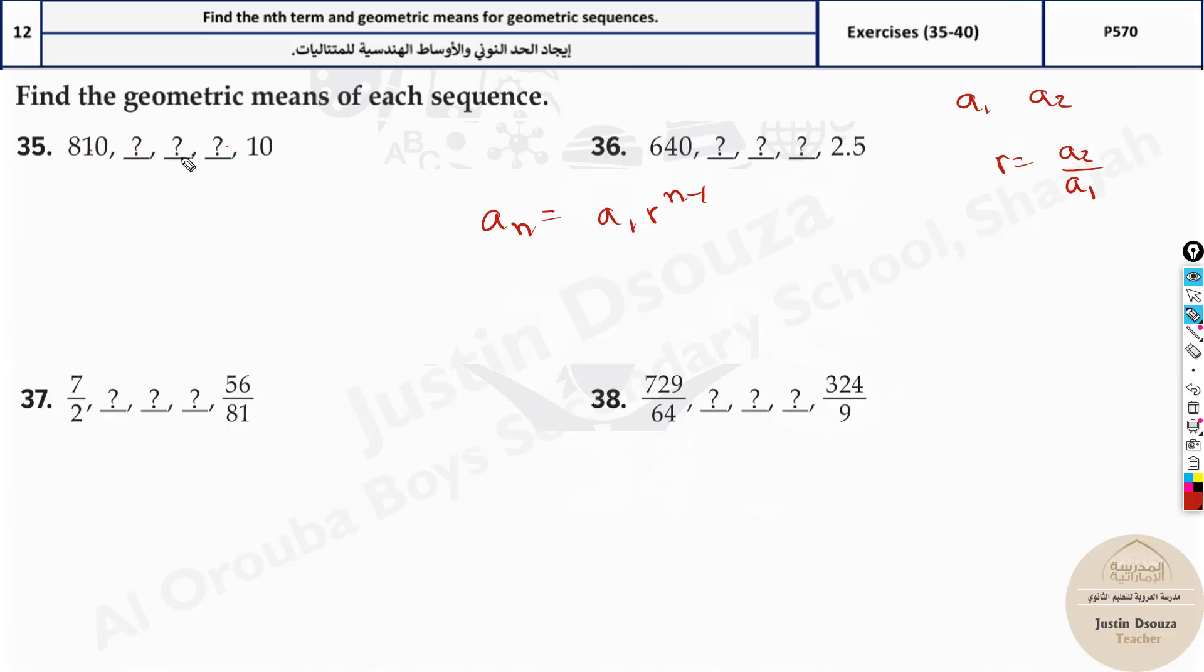But we know how many terms are there: 1, 2, 3, 4, 5. So I can tell n is equal to 5. The first term is 810, this is the nth term, that is 5. a_1 is a_5 in this case. So can we substitute and try something? a_5 will be equal to a_1 is 810, r is unknown. What is this n? n is 5 minus 1. Now what is a_5? It's 10 equals 810 r^4.